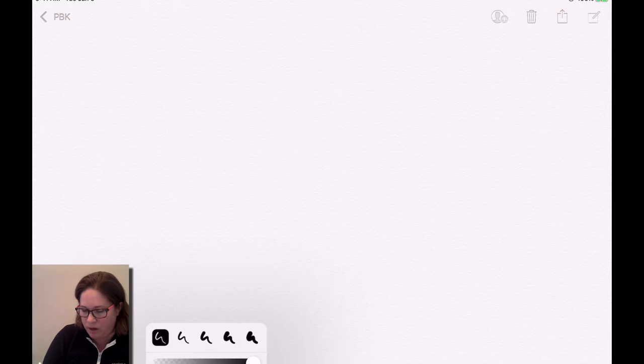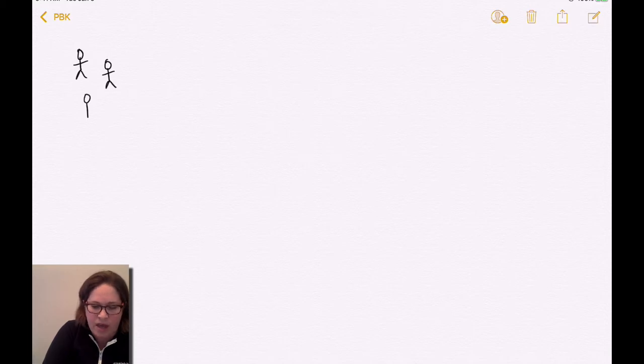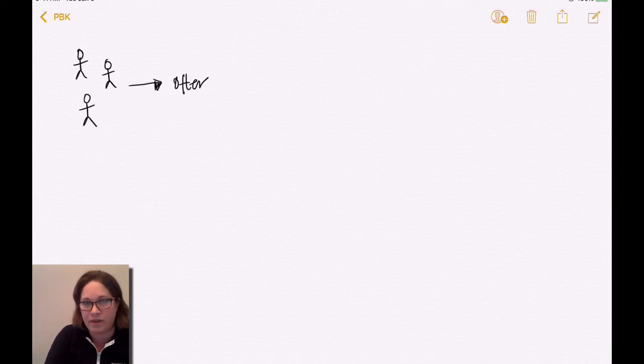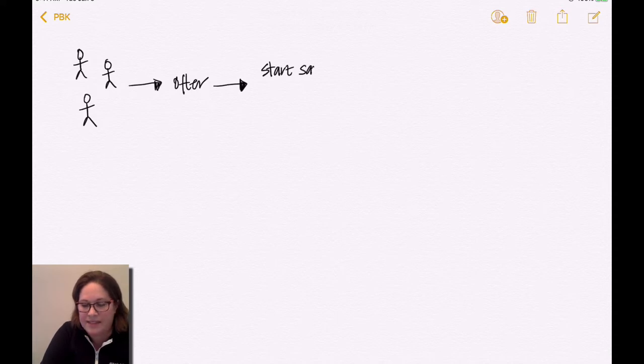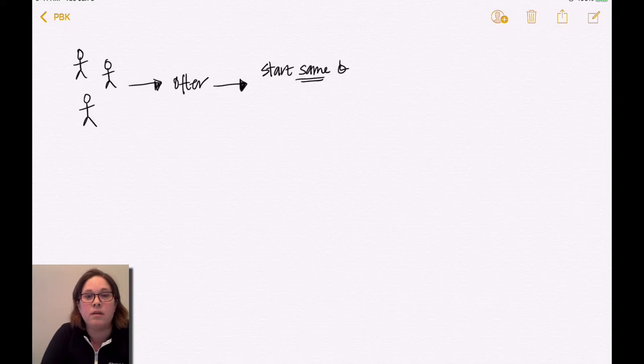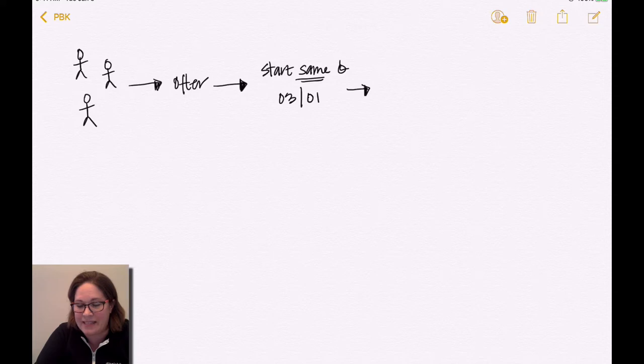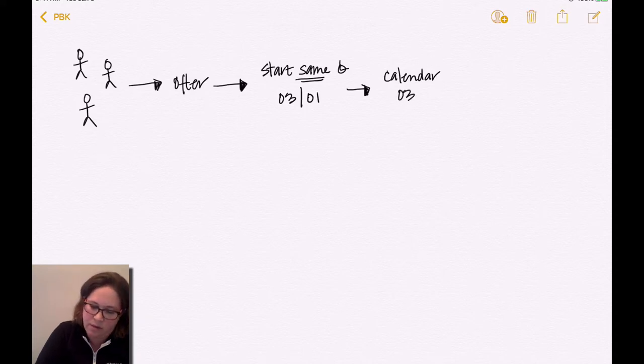So let's start with our little people. So here you have people that are buying your course, and they're purchasing at different times. So you have your offer, which you make that has your pricing information, everything on there, but you want, if you want, and we're going to show two different versions of this. If you want everyone to start at the same time, so that they drip at the same time, let's make that 03/01 for our date.